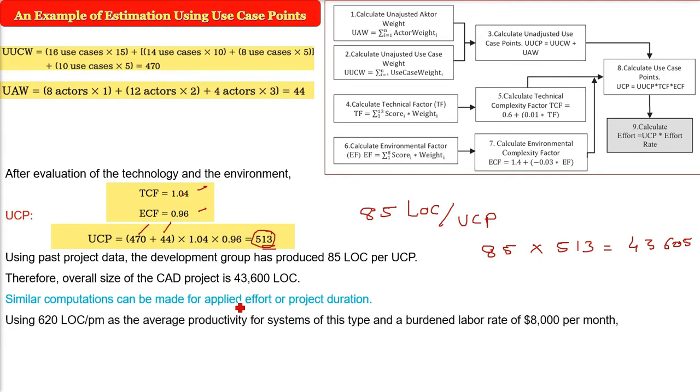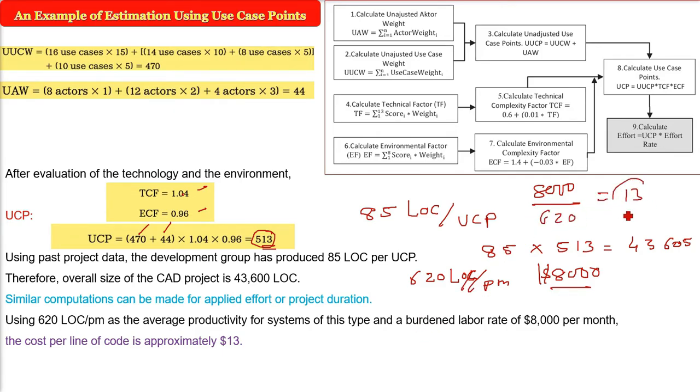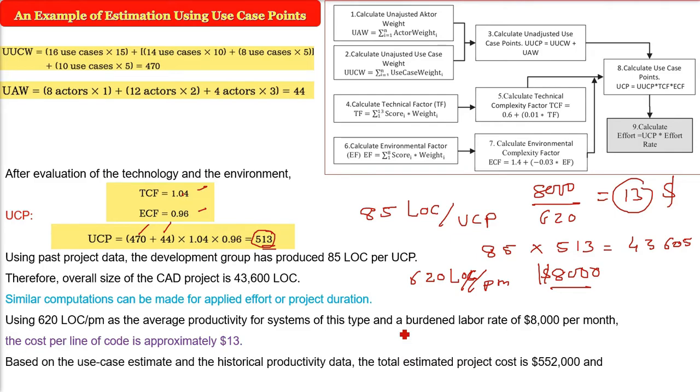So we have 513 here and the overall size of the project we just saw is what will be there. 85 is LOC per UCP. Multiply it with 513 UCP. Multiply 513. You got the use case points. Multiply it with the 85 LOC per UCP. You will get 43605. Let us take it as 43600. Now similar computation can be made for applied effort or project duration. We have 620 LOC per month as the average productivity for system of this type and there is a labor rate of $8000 per month.